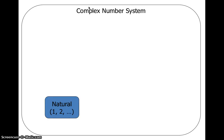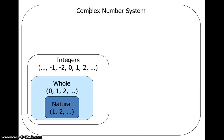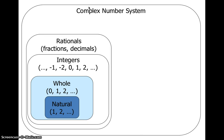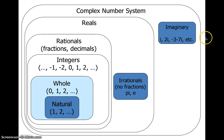Going back to the number sets diagram from the first day of school: we have our naturals, wholes, integers — all familiar. Rational numbers are fractions and decimals. Irrationals are things that can't be made into fractions, like pi, e, and non-perfect squares under a radical. Outside all of that — the reals — are imaginary numbers: i, 2i, negative 3 minus 7i.